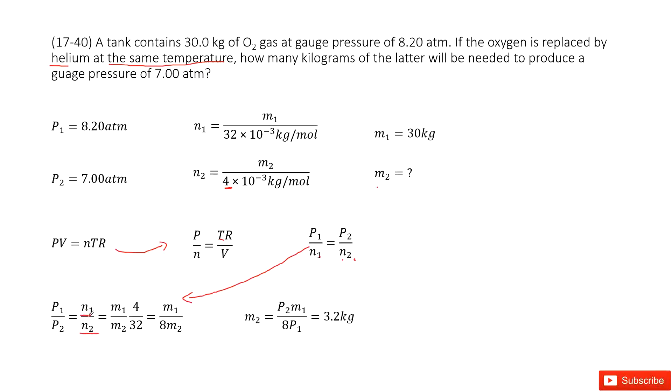Now we can relate the mole number n to the mass. N1 over N2 equals M1 over M2 times 4 over 32, which simplifies to M1 over 8M2.